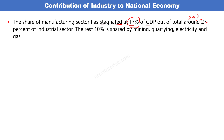बाकी जो 10% है वो mining, quarrying, electricity आदि का contribution है। Industrial sector में mining, quarrying, electricity सब आ जाता है। Primary sector यानि agriculture sector में fishing और forestry आते हैं। Out of 27%, 17% is contributed by manufacturing sector। Electricity में electricity generate होती है, mining और quarrying में minerals निकाले जाते हैं।